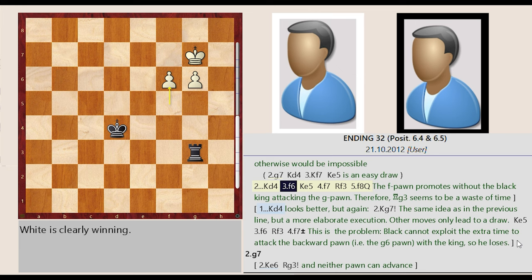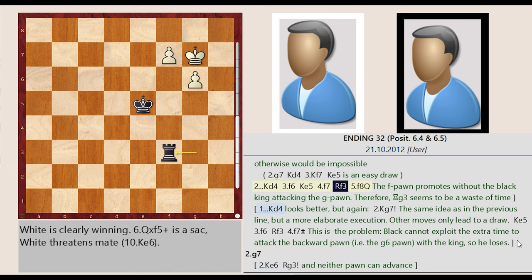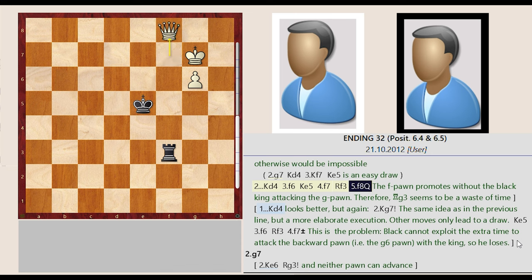F5 f6, King d4 e5, F6 f7, Rook g3 f3, F7 f8. The f-pawn promotes without the black king attacking the g-pawn. Therefore, g3 seems to be a waste of time.